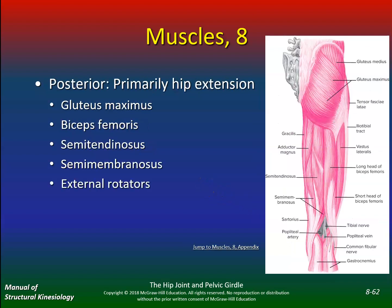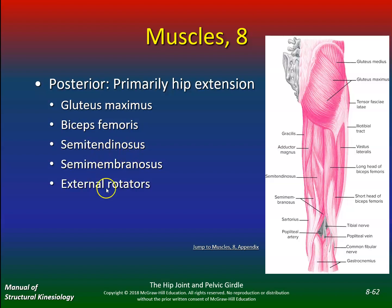This is probably the posterior chain — the one you want to focus on when doing exercises. You've got glute max, biceps femoris, semitendinosus, semimembranosus, and the external rotators. If you want to really develop a good posterior chain, these are the muscles you want to find and strengthen the most.